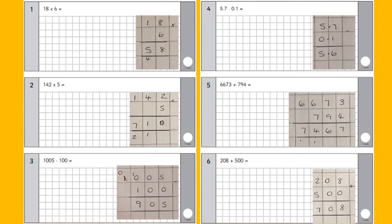Number four, we've got 5.7 subtract 0.1. For this one, definitely just make sure that your decimal points are in the same place and also in your answer, which is 5.6.